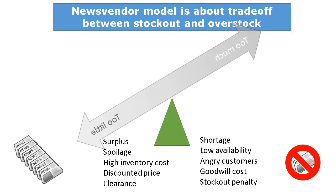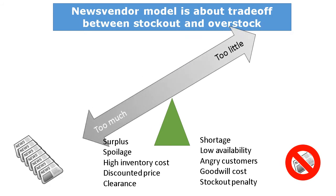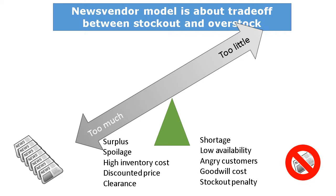When we order too little, then we would have shortage and low availability. This will make customers angry, and we could also have goodwill cost, which means loss of reputation and loss of future business. Also, some businesses could face stock-out penalty when they have shortage. On the other side, if we order too much, then the business would have surplus inventory. There would be higher risk of spoilage and high inventory cost. At the end of the sales season, the business would have to get rid of overstock at a discounted price.